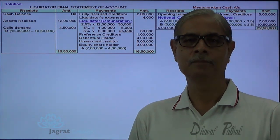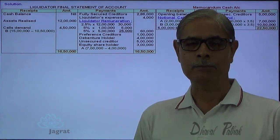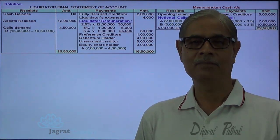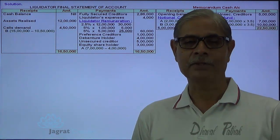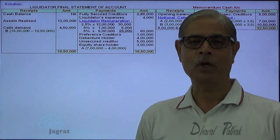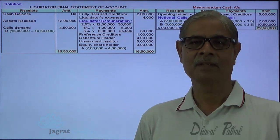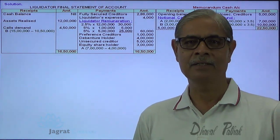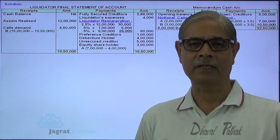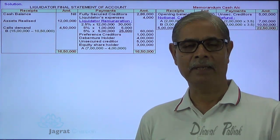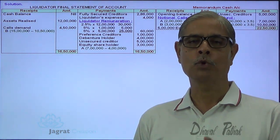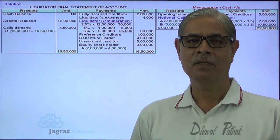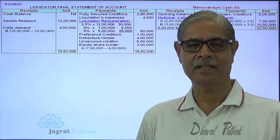So this is one more sum that has been explained. The important point in this sum is that the last call from one category of shareholder is demanded to make payment to the unsecured creditors as well as to make payment to those shareholders who have contributed more compared to the others. Thanks to all.